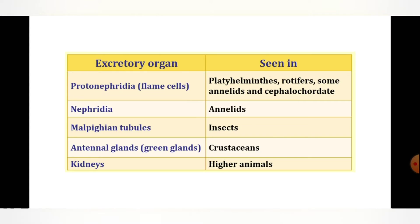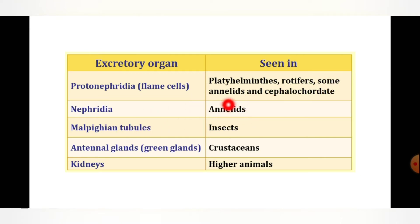You can also see the excretory organs found in different animals, starting from lower organisms. Proto-nephridia or flame cells are found in tapeworm, planaria, liver fluke, rotifers, and some annelids and cephalochordates. Nephridia are seen in annelids — for example, earthworm and Nereis. Malpighian tubules are seen in arthropoda, that is insects.